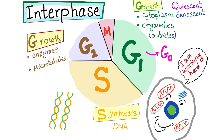As you know, the cell cycle has G0, G1, S, G2, and M. In G0 nothing happens. In G1 we start growing the cell, and in S there is DNA synthesis. In G2 we again grow the cell with addition of enzymes and microtubules, and in M — mitosis, or the actual cell division — occurs.